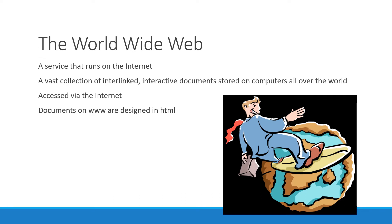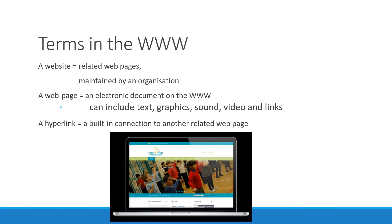The World Wide Web is a service that runs on the internet. It's a vast collection of interlinked interactive documents stored on computers all over the world. Whenever you go to a website, you are accessing that website from a computer somewhere in the world via the internet. The documents on the World Wide Web are designed in a language called HTML. A website is related web pages maintained by an organization. A web page is an electronic document on the World Wide Web — it can include graphics, text, sound, and video.